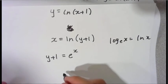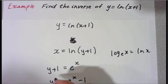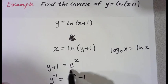Just subtract 1 from both sides. You have y equals e to the x minus 1. And that's our inverse. So I can go ahead and do that. And we are done.